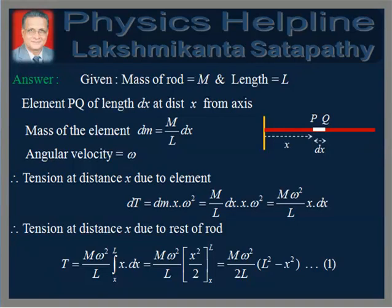Therefore, tension in the rod at a distance x from the axis due to the element is given by dT equals mass of element into x into omega square, which is equal to M omega square by L into x into dx.